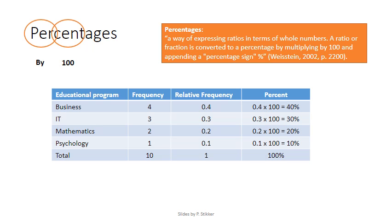So how does this work? Well, we take simply the relative frequency, which we calculated on the previous slide, and multiply it by 100. So for example, the first one, the 0.4, and we multiply that by 100, and we add the percentage sign, which is actually exactly what's done here.